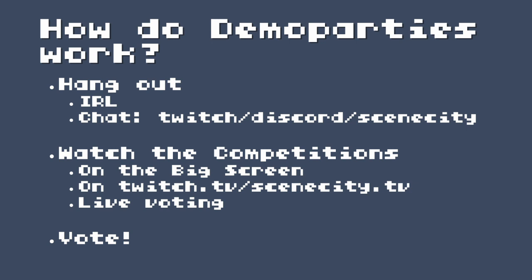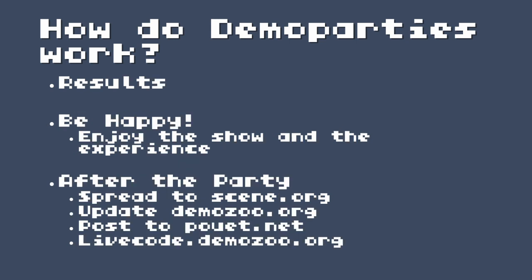Organizers will check the entries when the party's in progress. If it's online, hang out on Discord, Twitch, or SceneCity and watch the competitions. It'll be streamed on either twitch.tv or scenecity.tv. Most competitions will have live voting, so don't forget to vote. When all is said and done, the demo party will have a results show announcing the podium finishers. The main thing is to be happy and enjoy the experience.